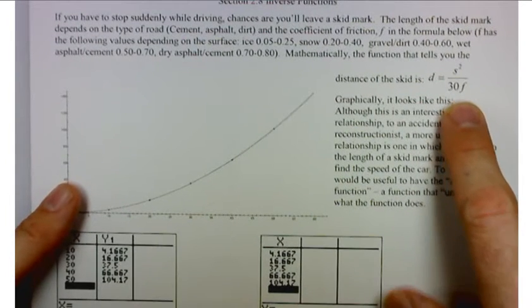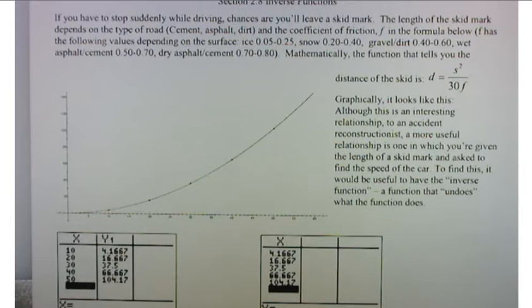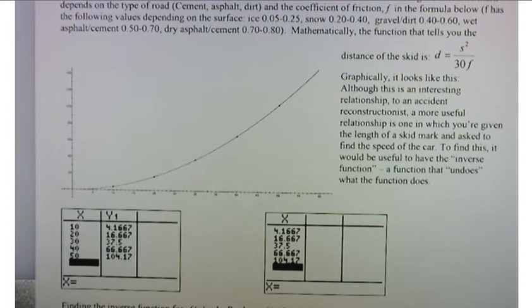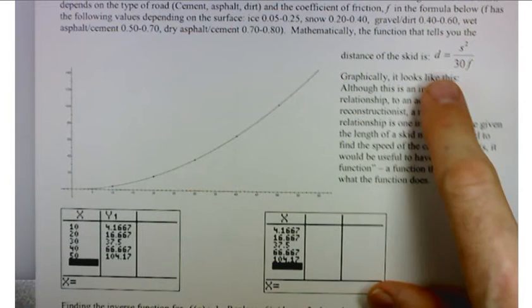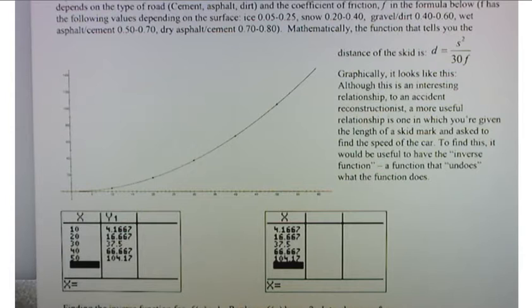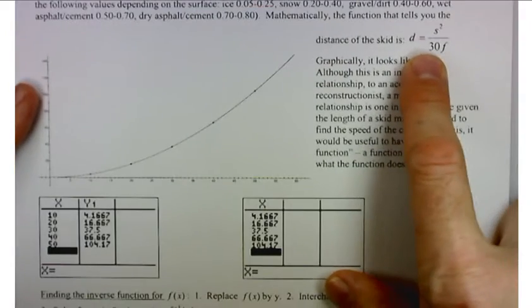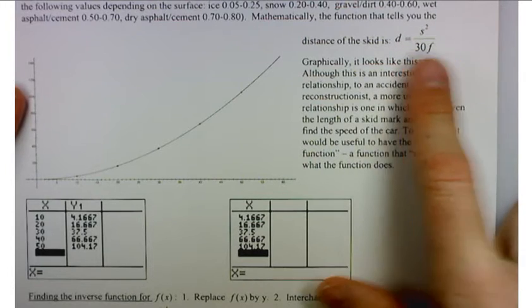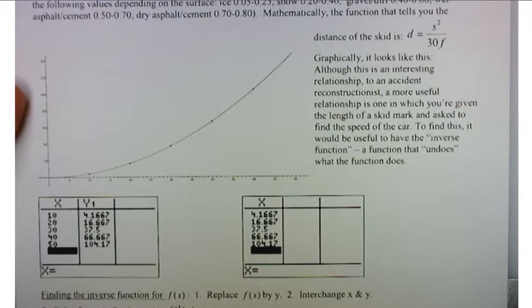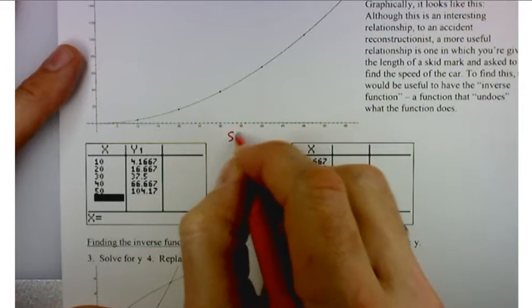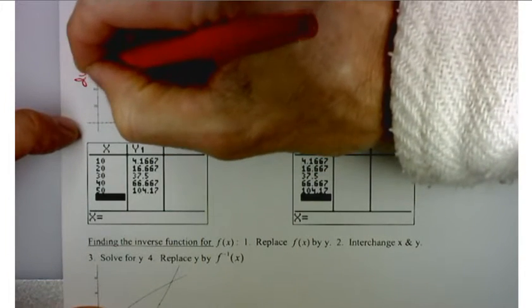The function that we're going to start with is something I saw in a book a little while ago. For all you CSI fans, whether the cops are investigating an accident or a crime, one of the functions that you could use models how fast the car was traveling versus the distance of its skid mark. That's going to depend on a lot of things, depending on the condition of the road: cement, asphalt, or dirt, if it's icy, rainy, et cetera. Let's choose a typical value for such a situation, in which case the distance of the skid mark is your velocity divided by 30 times this coefficient of friction. I think I chose cement for this particular one.